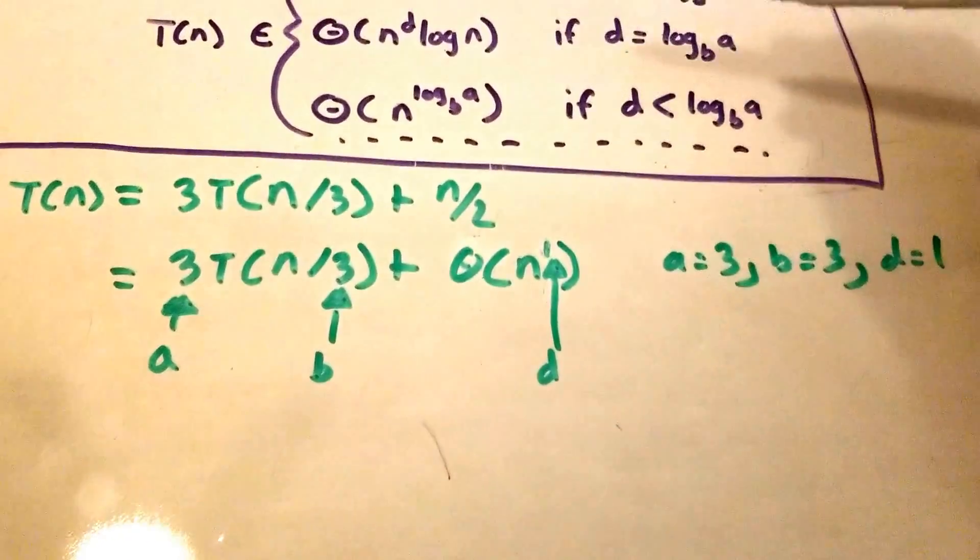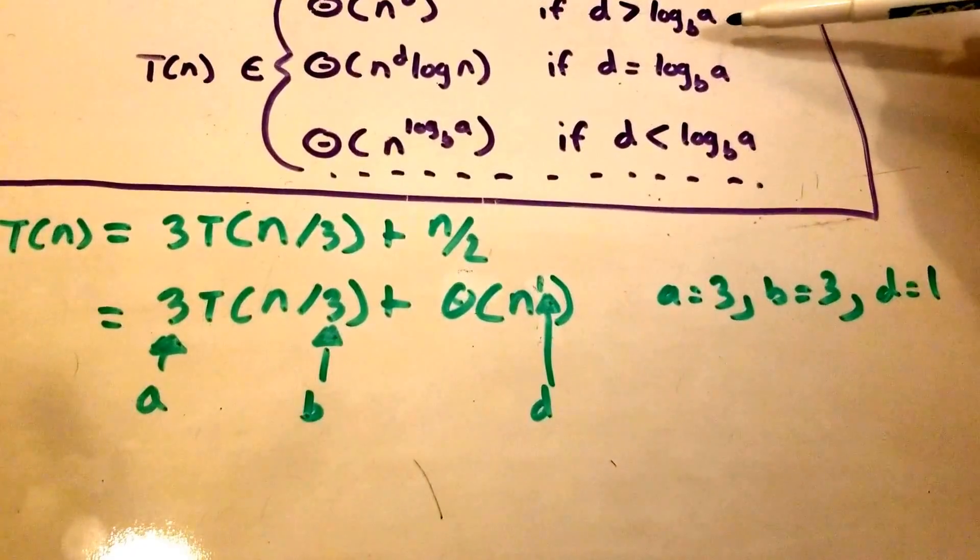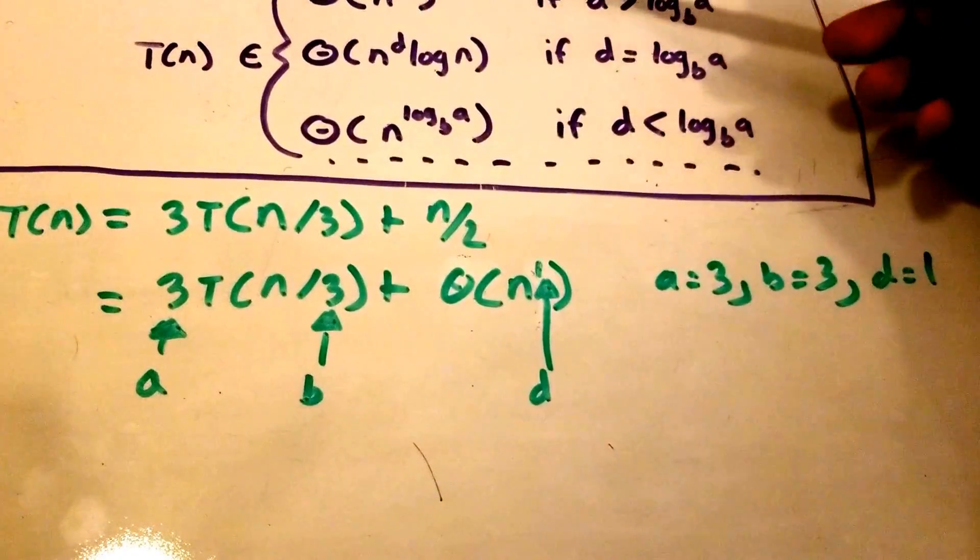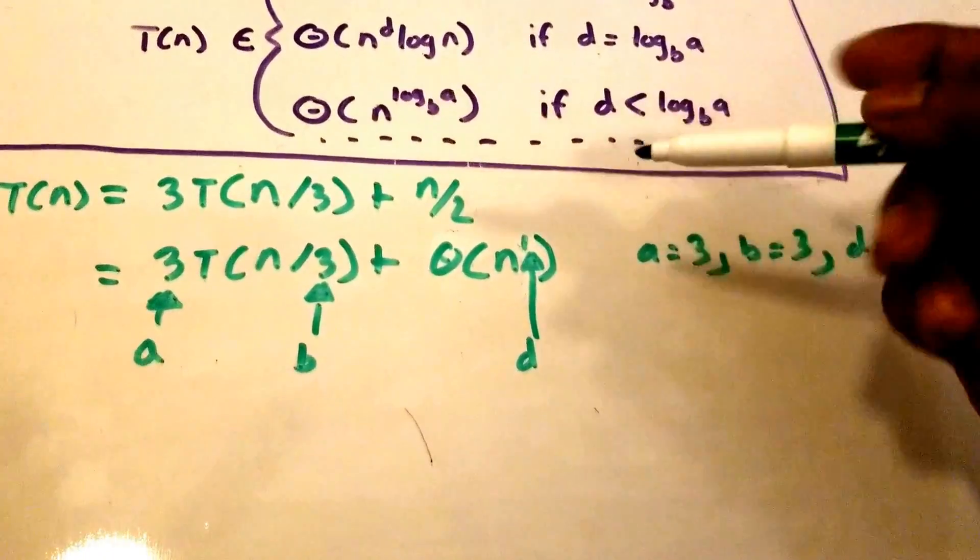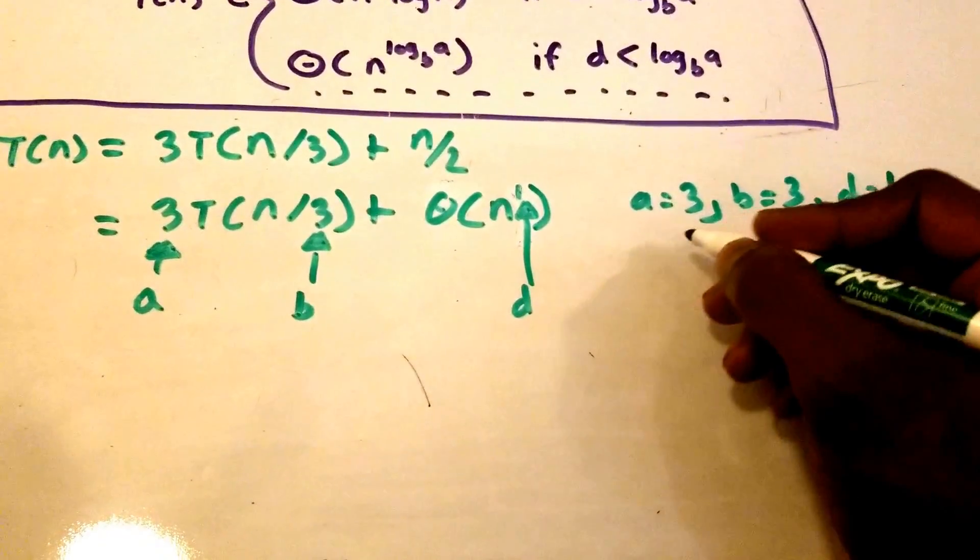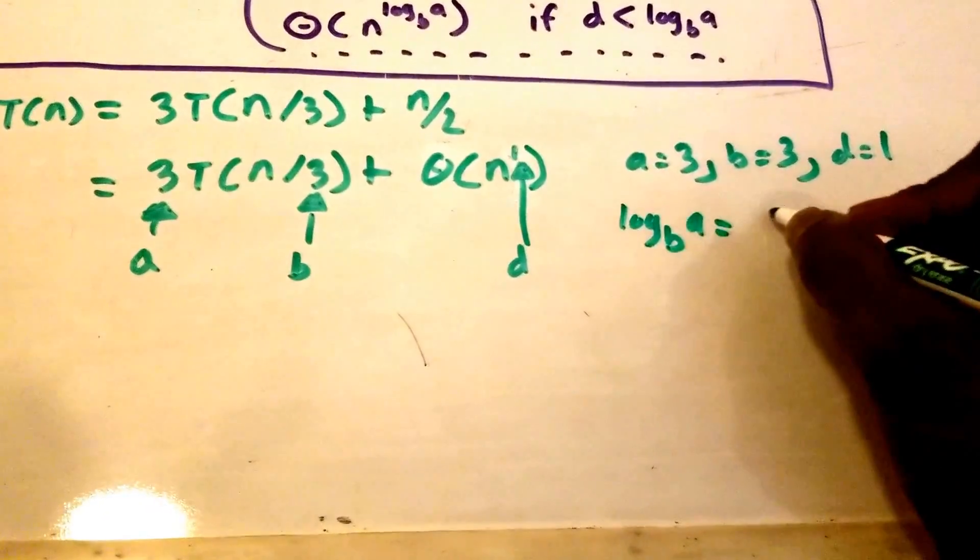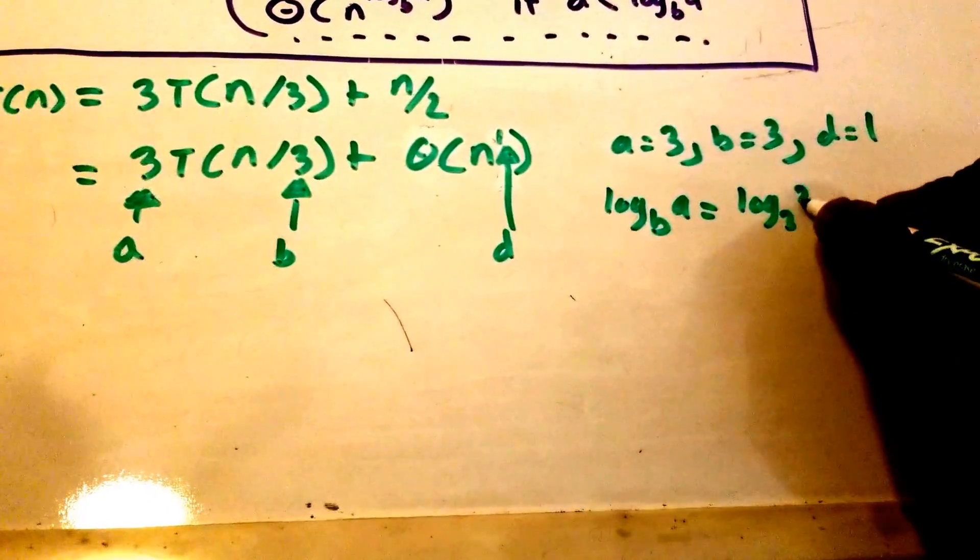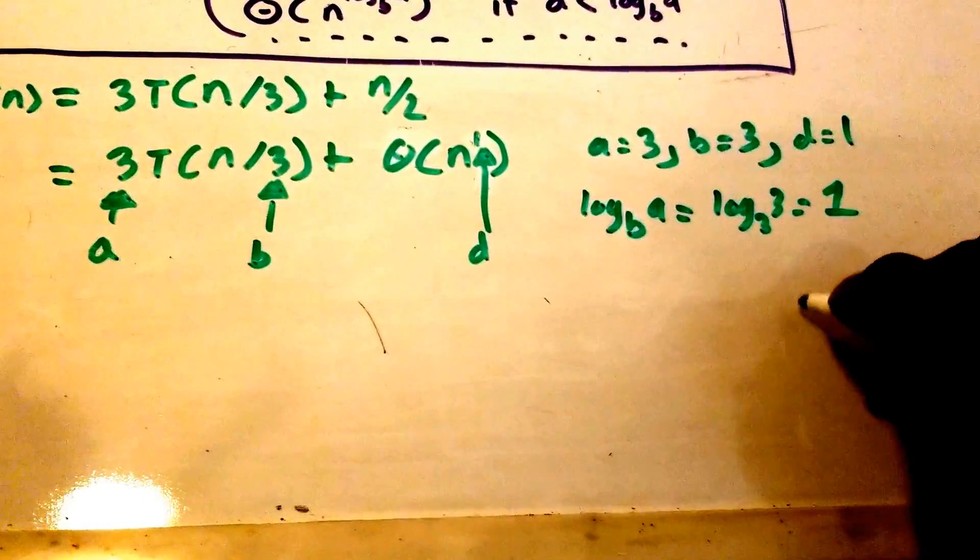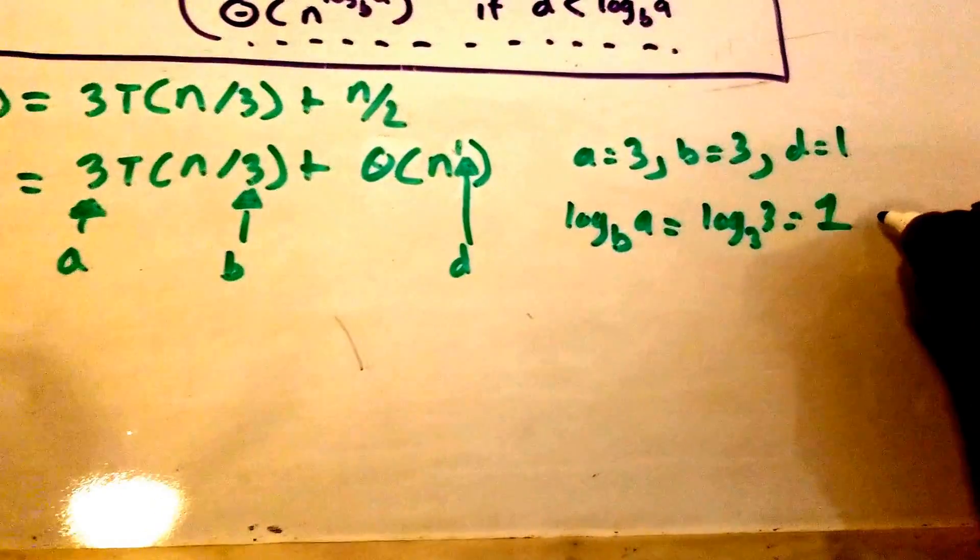So we need to figure out what log base b of a is so we can figure out which case to use for T. Alright, so log base b of a is equal to log base 3 of 3, which is equal to 1. So our d is also equal to 1.